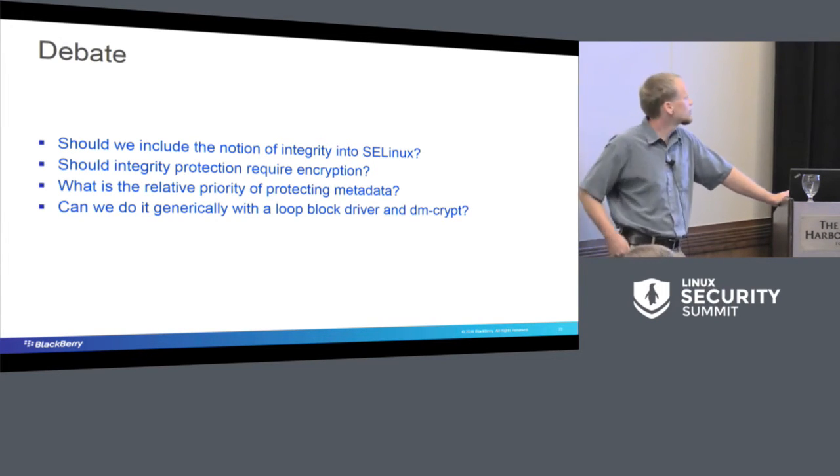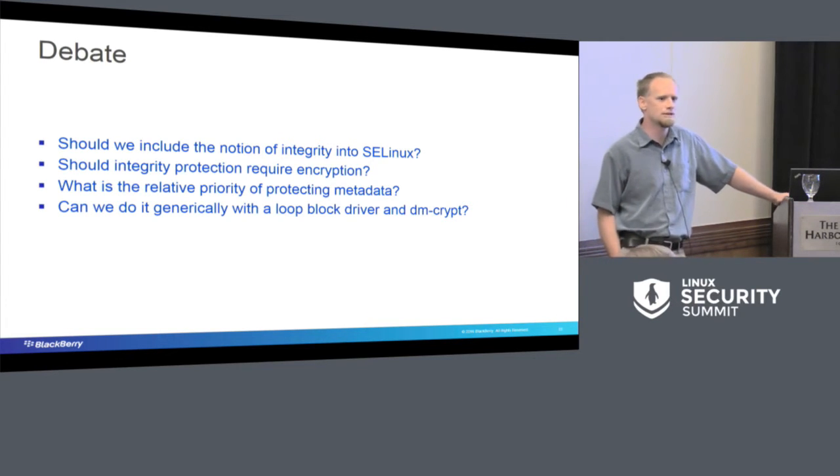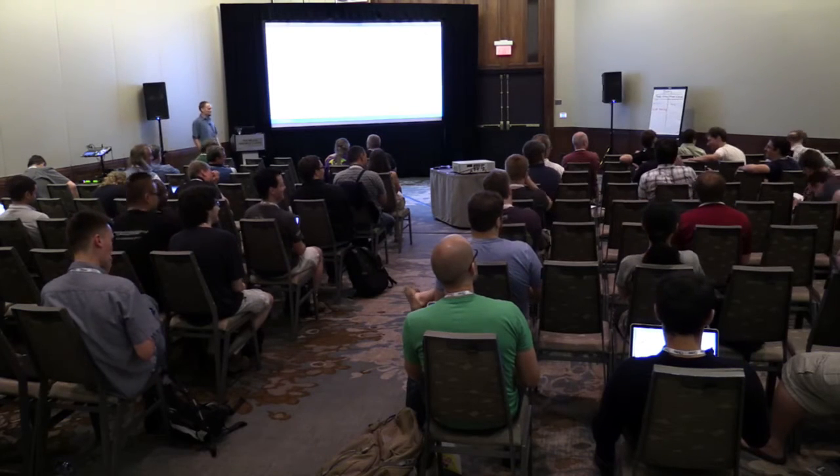In theory, we could actually have multiple different encryption domains with multiple different keys, multiple different dmcrypts. All of the metadata would be encrypted. However, there's caveats. Free space isn't reported correctly, but that's just the beginning of the problem because what happens if you run out of hard drive space on something that is a dmcrypt looped back file? I have no idea. I'm going to guess not good things. That's all I've got. Does anybody have any comments?